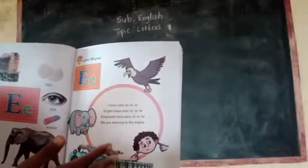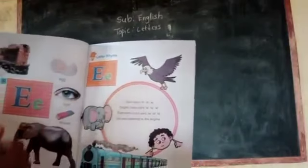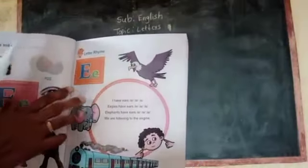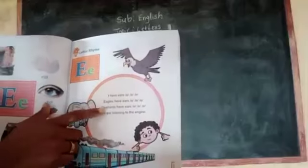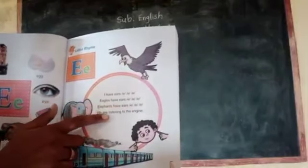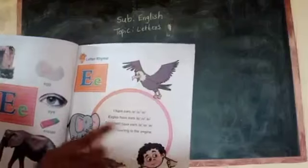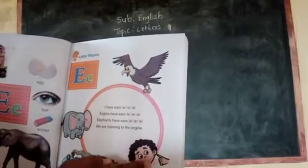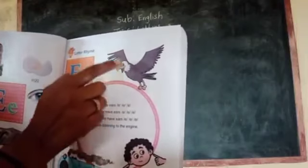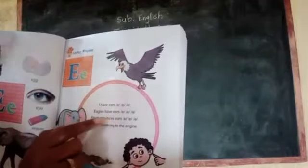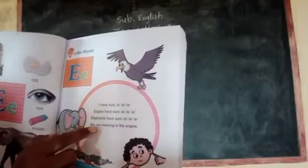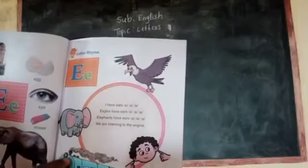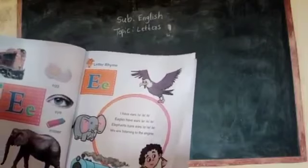Next, ear-related rhyme. I have ears. Eagles have ears. Elephants have ears. We are listening to the engine. Elephant, eagle, I have ears. Eagles have ears. And elephant have ears. We are listening to the engine. Engine sound.